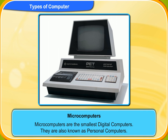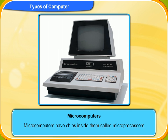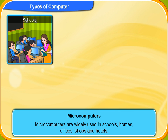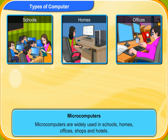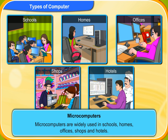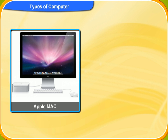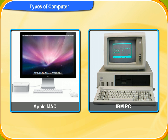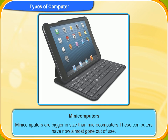Microcomputers are the smallest digital computers. They are also known as personal computers. Microcomputers have chips inside them called microprocessors. These computers are widely used in schools, homes, offices, shops, and hotels. Apple Mac and IBM PC are some examples of microcomputers.